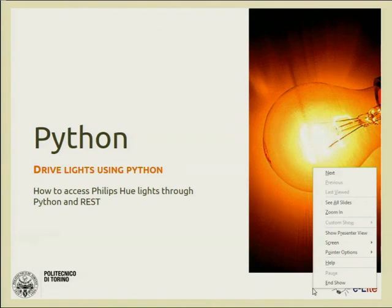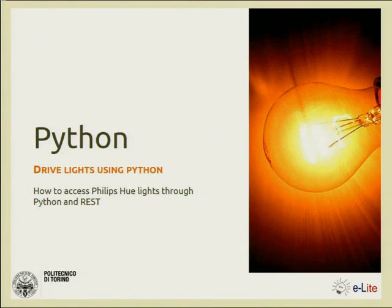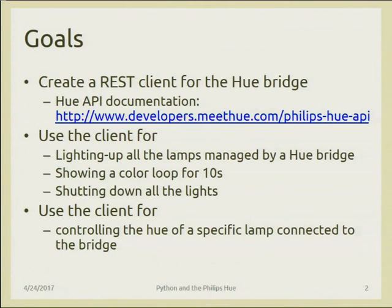Today we are building a small Python program to control these two lamps. We will speak with the Philips Hue Hub, which provides a REST server — a REST interface — and use that to control the lamps. We want to control all lamps connected to the bridge; right now we have only two, but if there were 100, we would control them in the same identical way.